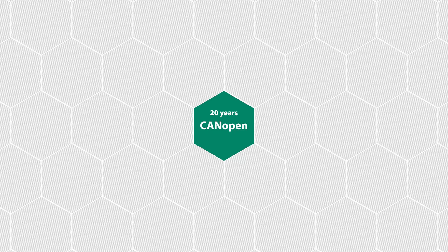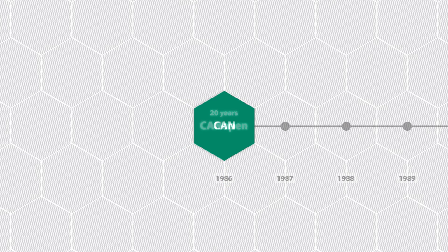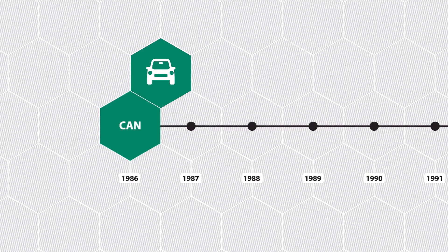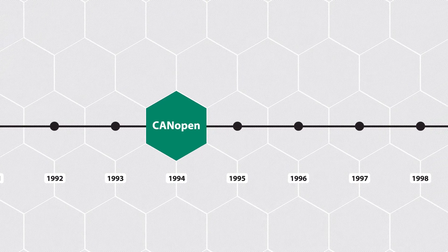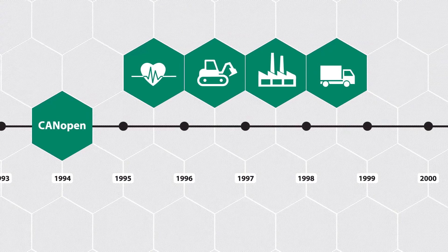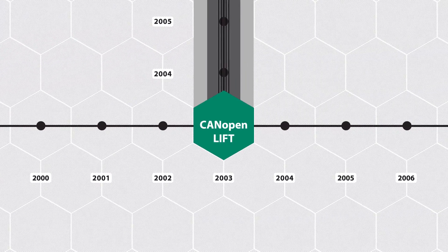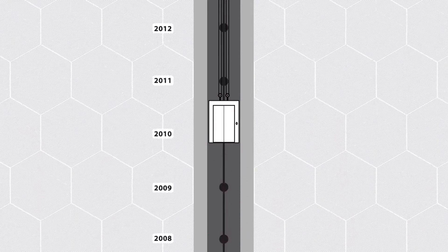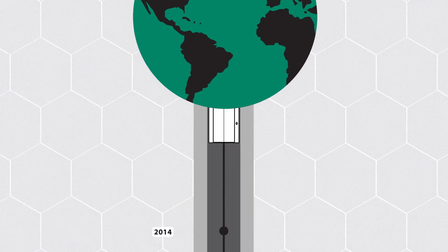For over 20 years, CANopen has proven to be the networking standard for industrial electronic components. It began in 1986, when CAN was introduced for the automotive industry. In 1994, CANopen was released. For many particular device classifications and applications, specific profiles have been standardised. In June 2003, CANopenLift was released, and for over a decade now, CANopenLift has been the established open standard in the elevator industry.